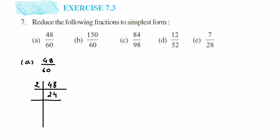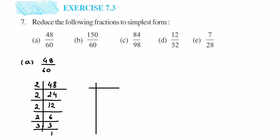First, let's take 48. We know 48 goes in the 2 table: 2 × 24 = 48. Again, 2 × 12 = 24, then 2 × 6 = 12, then 2 × 3 = 6, then 3 × 1 = 3. For the prime factorization, you should take only prime numbers. The next number is 60. 60 goes in the 2 table: 2 × 30 = 60, 2 × 15 = 30, 3 × 5 = 15, and 5 × 1 = 5.